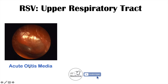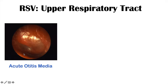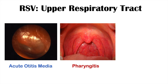The first upper respiratory tract infection is acute otitis media, which is a middle ear infection. Otitis means inflammation of the ear, and media means middle — so middle ear infection. When you look inside someone's ear with an otoscope, the eardrum is bulging. There's fluid behind the eardrum causing pressure and bulging of the tympanic membrane.